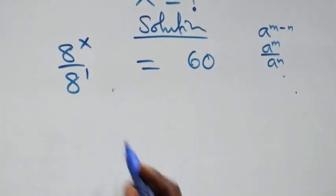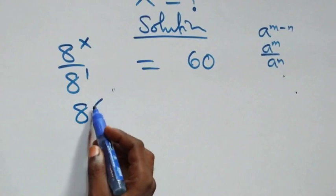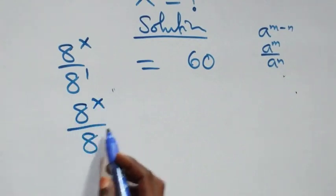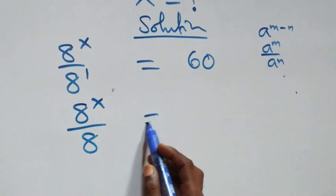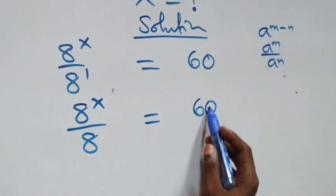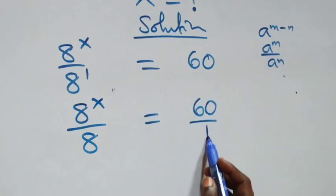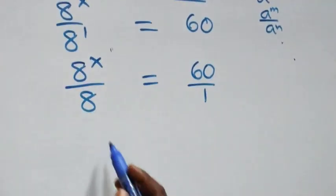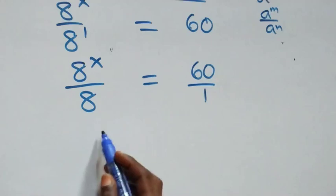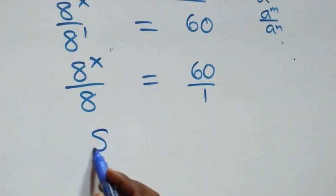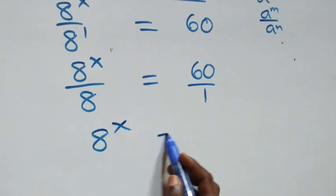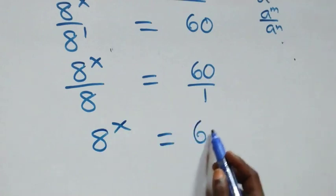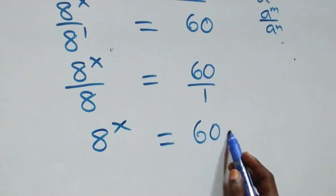This is the same as 8 raised to power x over 8 raised to power 1, that is 8, equals 60 over 1. When we cross multiply, 8 raised to power 1 times 8 is the same as 8 raised to power x, which equals 60 times 8.